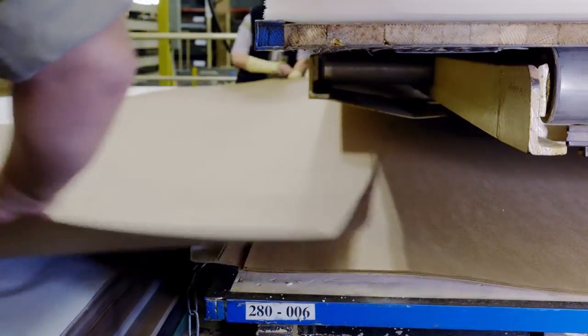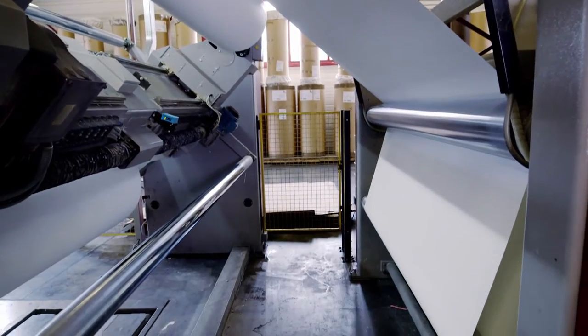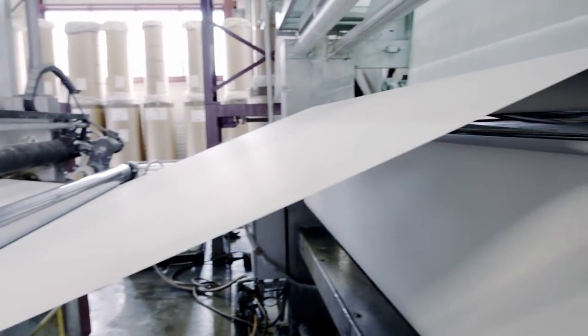In the impregnation process, decorative and core papers go through impregnation channels and measuring units. Resin application is controlled by measuring units and subject to the paper weight or the requirements of the impregnated product.